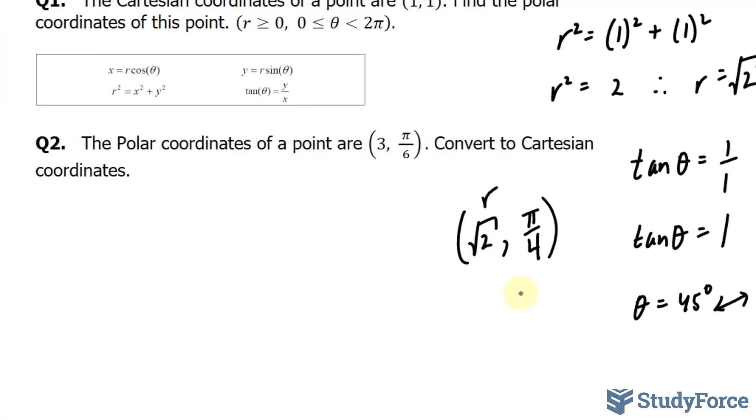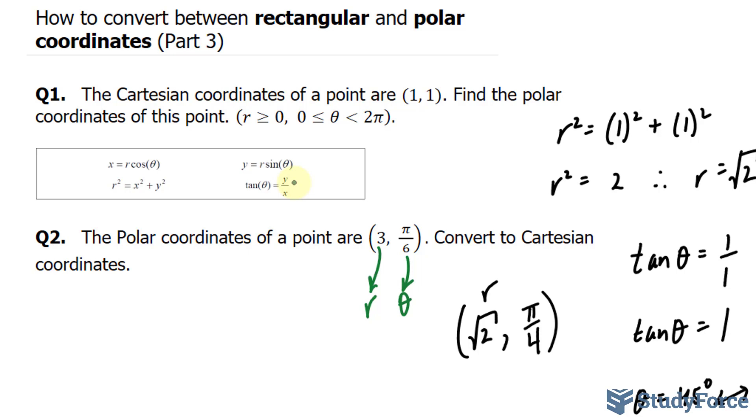In question number 2, they ask, the polar coordinates of the point are 3 and pi over 6. Convert to Cartesian coordinates. So this right here represents my r and this right here represents my angle, pi over 6. I'll use the top two formulas to find out my x and y values.